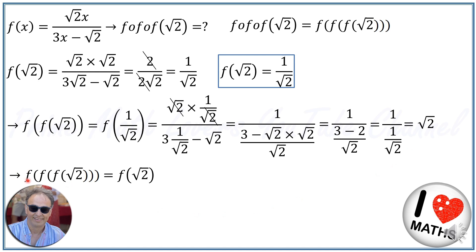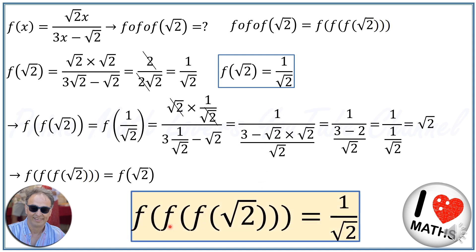Now we need to calculate f∘f∘f(√2). We found that f∘f(√2) = √2, so f∘f∘f(√2) = f(√2). But we already calculated f(√2), so the final answer is f∘f∘f(√2) = 1/√2.